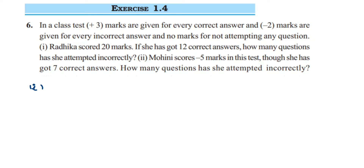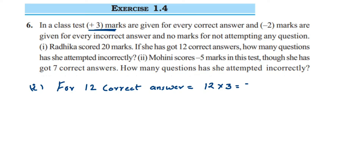We know she has given 12 correct answers. For 12 correct answers, they are giving 3 marks for every correct answer, so it will be 12 into 3 which equals 36 marks. So for correct answers she got 36 marks, but the total score is 20, which means she has attempted wrong answers also.